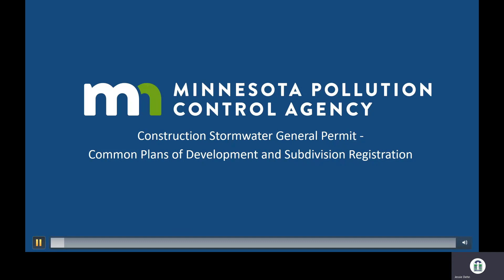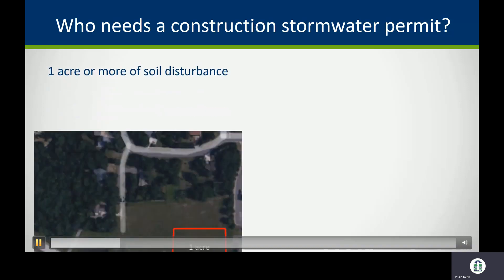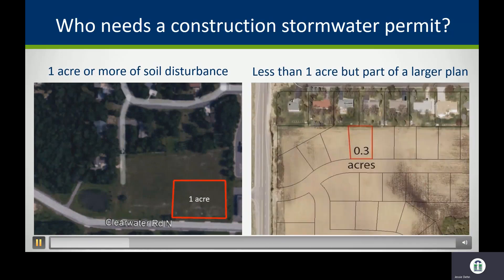We'll be discussing the MPCA's construction stormwater general permit and exploring how common plans of development are addressed in the permit. The goal is to inform developers and contractors how to transfer permit coverage when lots in common plans of development are bought and sold. A construction stormwater permit is required when any construction activity results in land disturbance of one acre or greater, or when disturbance is less than one acre but part of a larger common plan of development.